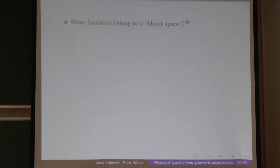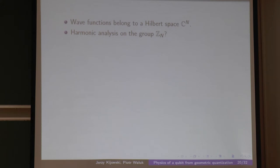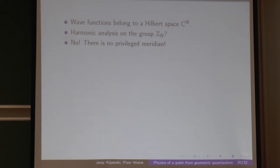The wave functions have those deltas and belong to the Hilbert space C^n, and the harmonic analysis is just the harmonic analysis of the cyclic group Z_n. However, this picture is obviously non-physical because it requires a privileged meridian — you declare some meridian as phi equals zero, and there is no way to change it. Outside of British islands, we have a tendency to think all meridians are equal.